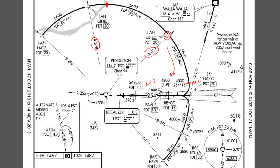Also note that arcs can have changing altitudes. On this arc, if you intercept it at HECP, you have to fly at 5,900 feet until you reach AUIA, where you can descend to 5,600 feet.